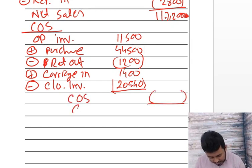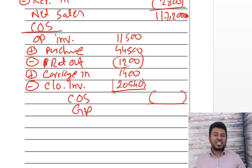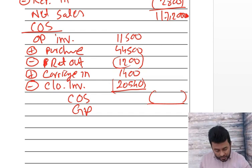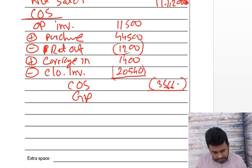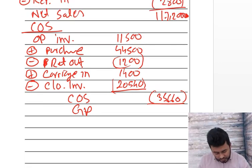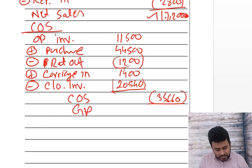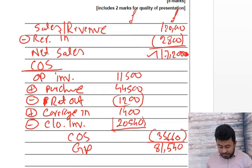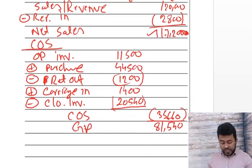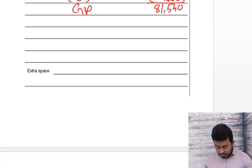Then you get gross profit — not the general practitioner, not the doctor — gross profit. The cost of sales added up is £35,660. Take away from net sales £117,200 and you get gross profit of £81,540. That's very acceptable presentation — your 8 marks are in.